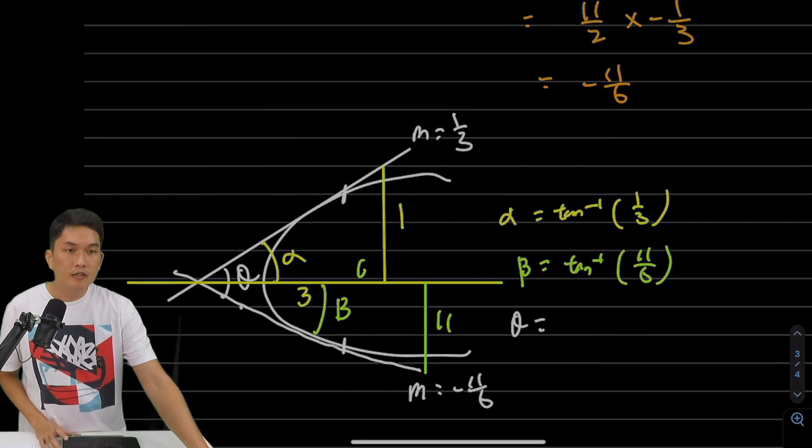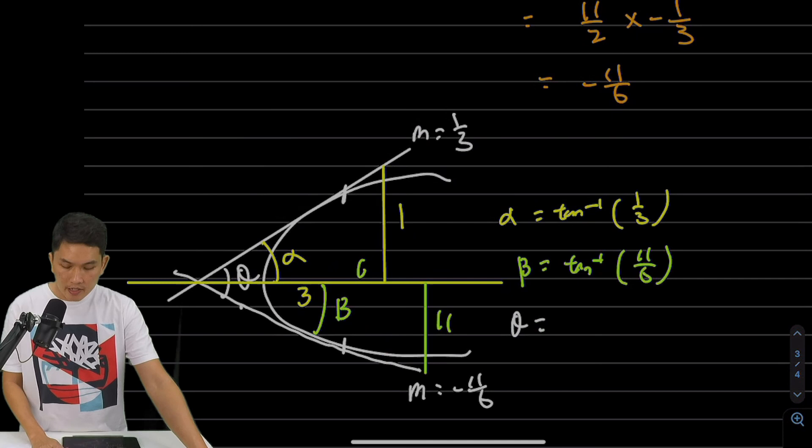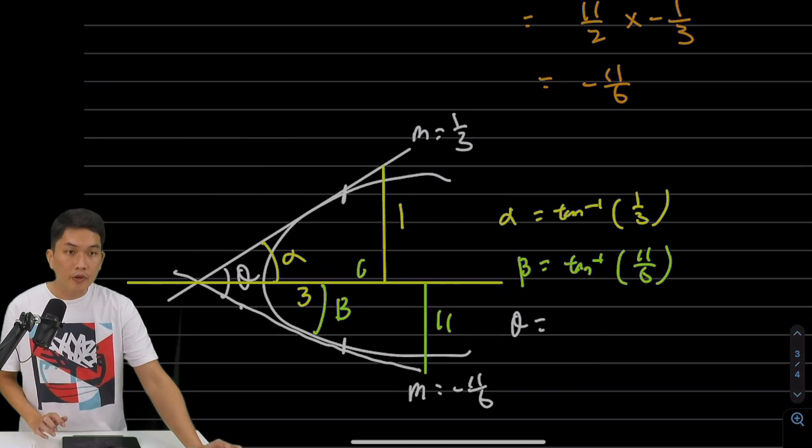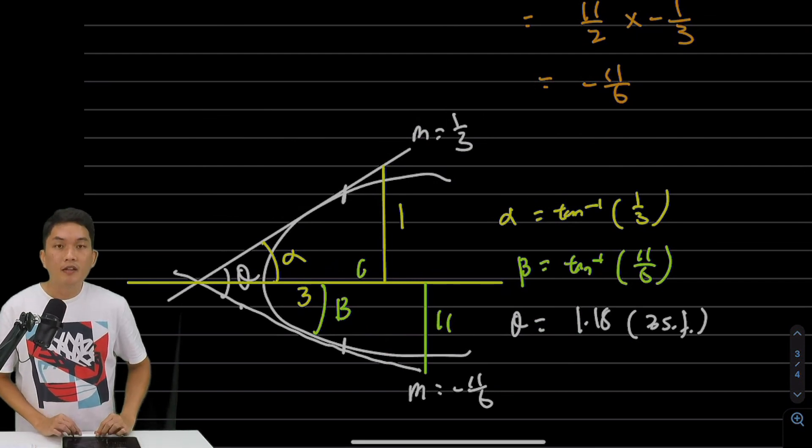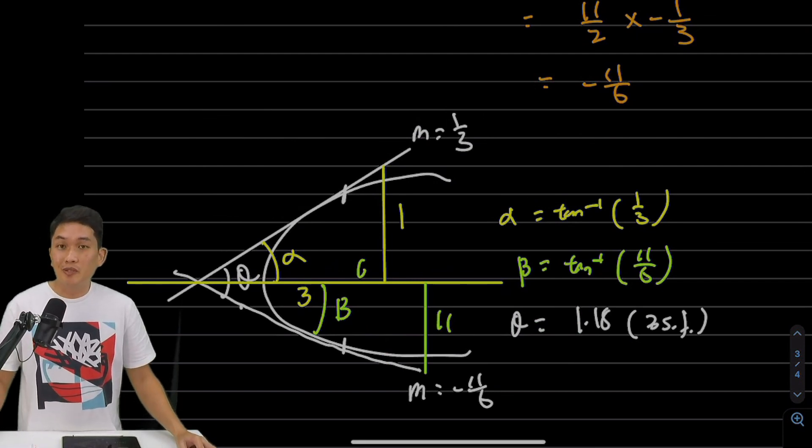Let me quickly check the answer. In radians, the answer is 1.18 to 3 significant figures. That is question number 2. Hope that was helpful, and I'll see you in question number 3.